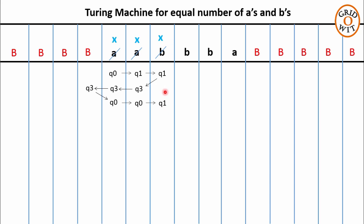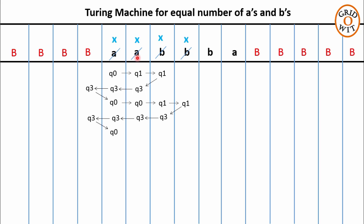So q1 on reading X moves towards the right without changing the symbol X and without changing the state q1. On reading symbol B, q1 will replace it with X, take a left move, and change its state to q3. The responsibility of state q3 is to reach the starting symbol of the string. So q3 skips all Xs, As, and Bs and moves towards the left. On reading the blank symbol, q3 becomes aware it has moved one step extra, so it takes a right move and changes its state to q0. The second iteration is also completed, and we have successfully deleted one more pair of AB.